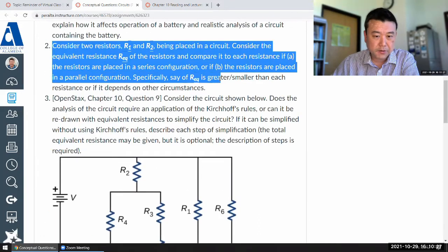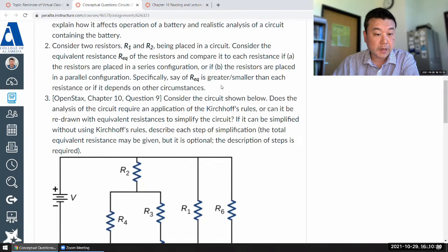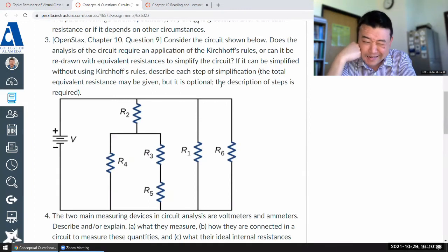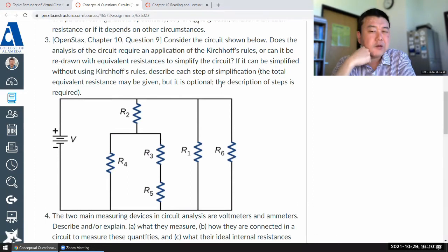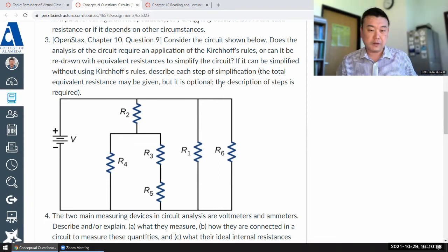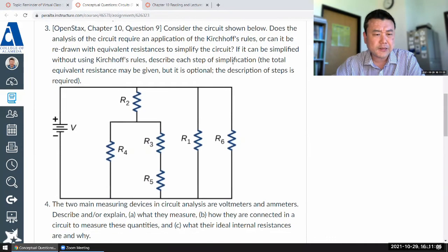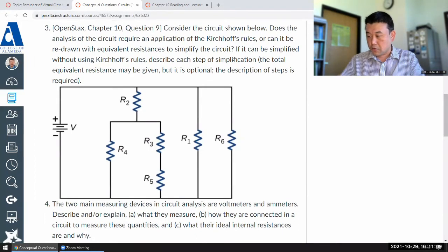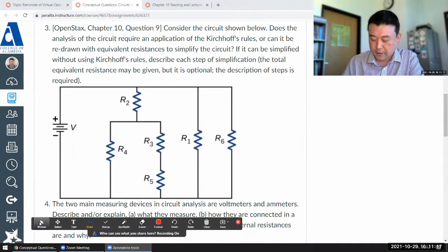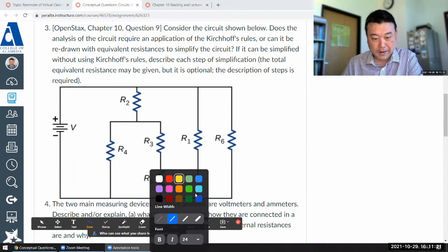So okay, I think that's basically what I wanted to say, and let's look at this question here. So it asks: consider the circuit shown below. Does the analysis of the circuit require an application of Kirchhoff's rules, or can it be redrawn with equivalent resistances to simplify the circuit? If it can be simplified, describe it. Let's do that. I think once you see how it's done, or once you have seen it, it will seem fairly intuitive.